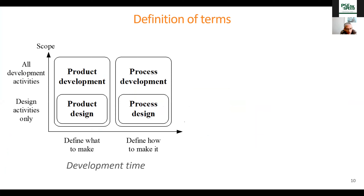Let me start with some definition of terms. On the plot, you see both process development and product development. On the x-axis is development time; on the y-axis is the design activities involved — the scope. The question is: which comes first, the process or the product? You need a process to make a product, but unless we have a product to make, we don't really have a process. So the product design and development comes first, and then we need a process to develop it.